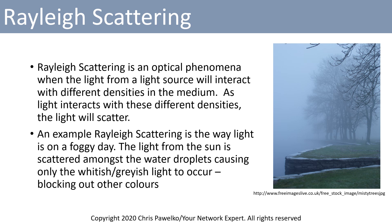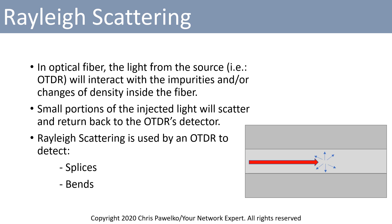The next phenomena with regards to how an OTDR measures loss in a fiber is Rayleigh scattering. Rayleigh scattering is an optical phenomena when the light from a light source will interact with different densities in the medium. As light interacts with these different densities, the light will scatter. An example of Rayleigh scattering is the way that light is on a foggy day — the light from the sun is scattered amongst the water droplets, causing only the whitish-greyish light color, blocking out other colors. In an optical fiber, the light source from the OTDR will interact with the impurities and/or changes in density inside the fiber, and small portions of the injected light will scatter and return back to the OTDR's detector.